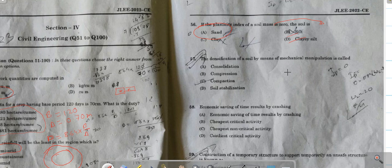Question number 57: The densification of a soil by means of mechanical manipulations is called - the correct answer is compaction. Consolidation is the mechanical process by which soil changes its volume gradually in response to change in stresses. So consolidation is different. Compaction uses mechanical instruments to densify the soil. Soil stabilization is different where we add admixtures to strengthen the soil.